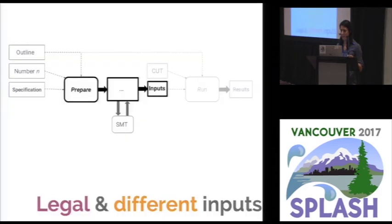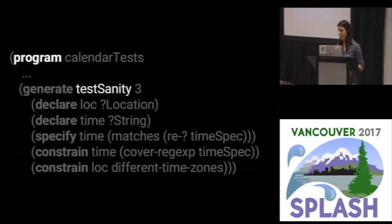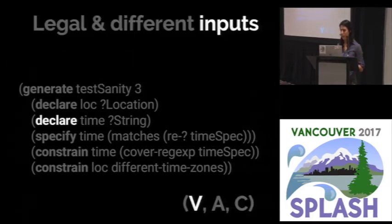This means that the JUnit interface is really just one interface for Yorick. Because what's really happening here in the prepare phase, when it generates these inputs, is that the framework is compiling your outline into a Yorick program. And this program looks a lot like your outline. So in this program, you can declare your inputs, which Yorick stores as variables V in your environment.